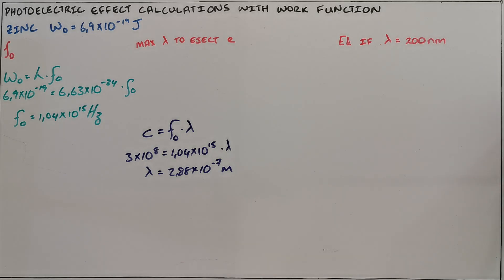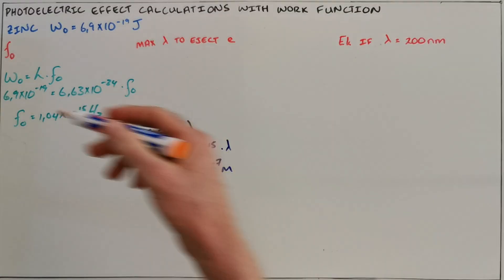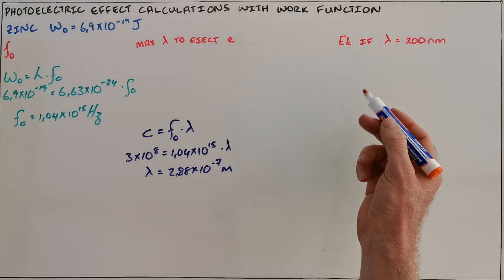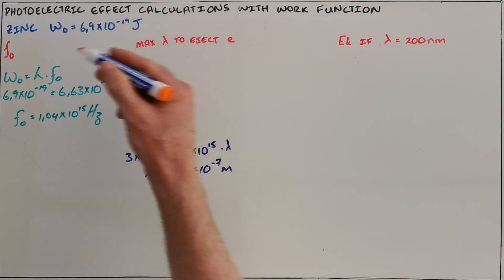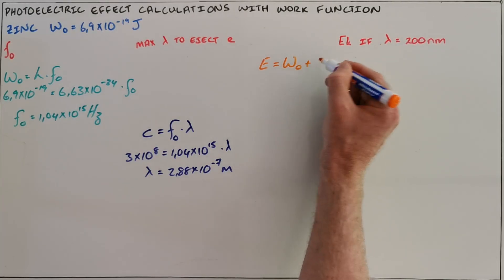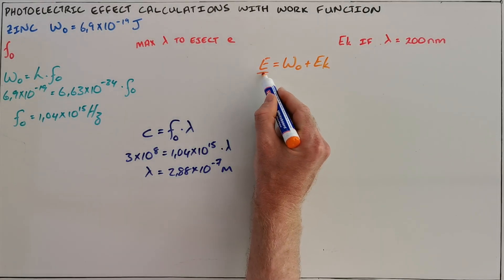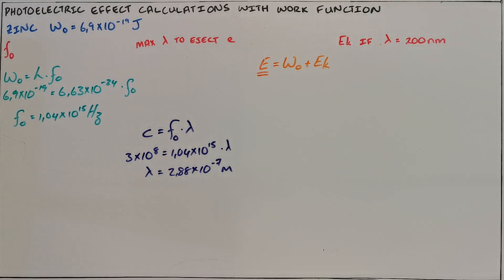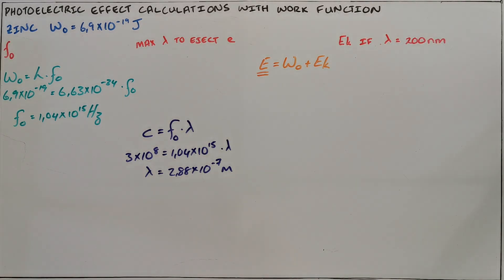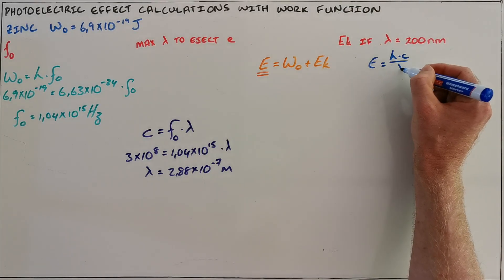A common question that follows would be: calculate the kinetic energy if this metal is radiated with a wavelength of 200 nanometers. Since we are asked for kinetic energy and we have the work function, we are going to use the formula E equals work function plus kinetic energy. First, we need to determine the energy of this photon.